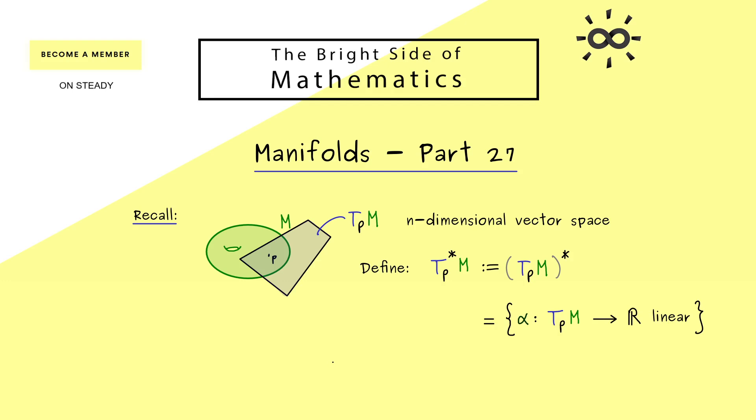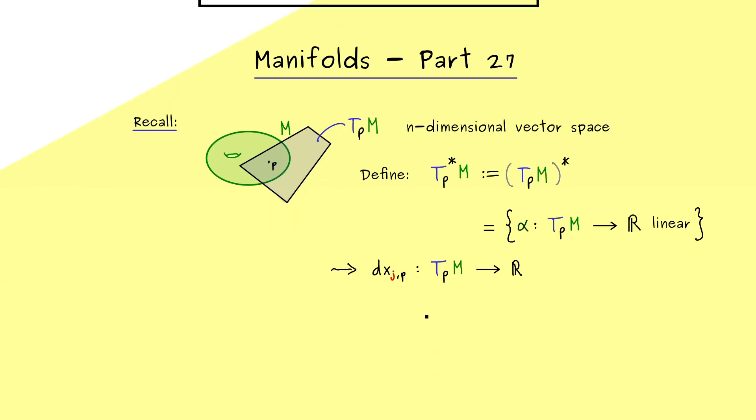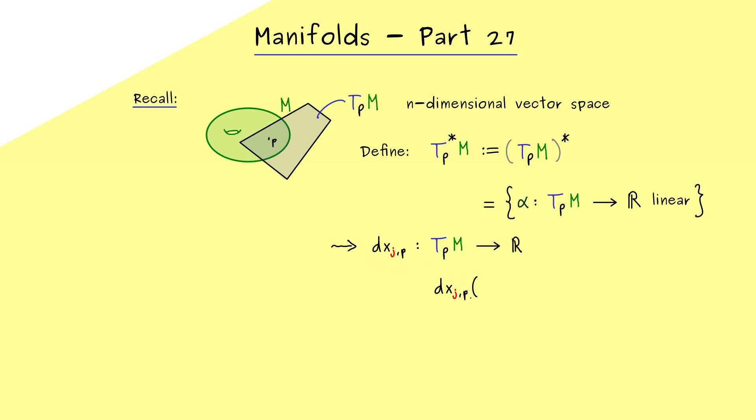If you remember, in the last video we already considered such a linear functional, namely dx_j. If we want to be more precise, we put the point p into the name. This gives us a linear map from T_p M into the real number line R. We can use the coordinate basis of T_p M for the definition of dx_j. Just put ∂_k as a tangent vector into the map, and by definition the result should be the Kronecker delta. We know what happens to all the basis vectors and can extend this to a linear map.